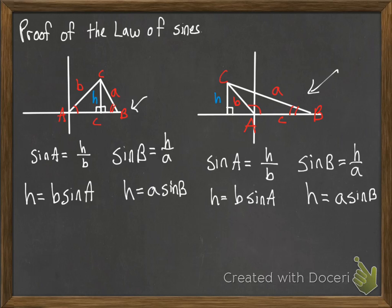Now I've drawn the two pictures just to demonstrate that this works regardless of whether or not we're dealing with an acute triangle where all the angles are acute, or whether or not we're dealing with an obtuse angle. Now that we know that H is B sine of A and H is also A sine of B and we have that in both triangles here, we can set them equal to each other.